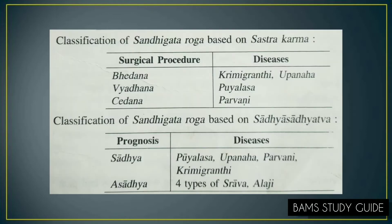Pooya Alasa, Uppanaha, Parvani and Krimigrandhi are Sadhya Vyadhis, whereas the four types of Strava and Alaji are Asadhya Vyadhis. From these Sadhya Vyadhis, Krimigrandhi and Uppanaha are Bhedana Sadhya, Pooya Alasa is Vyadana Sadhya, and Parvani is Chhedana Sadhya Vyadhi.